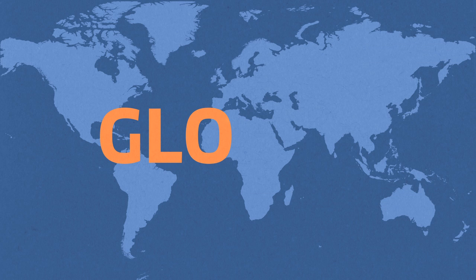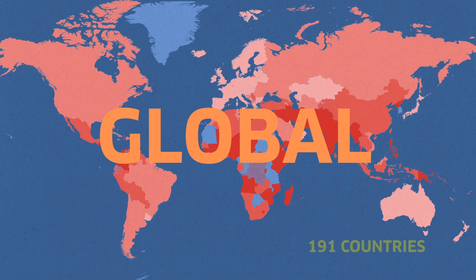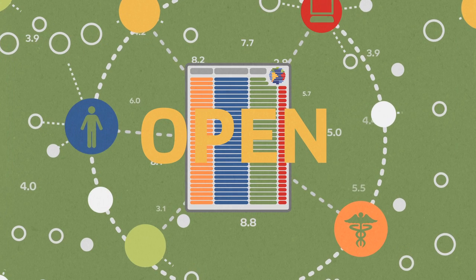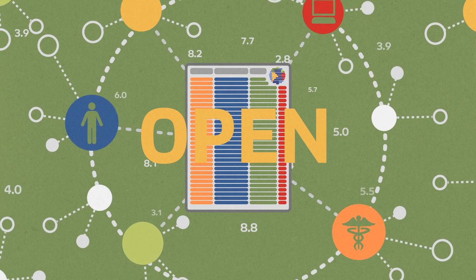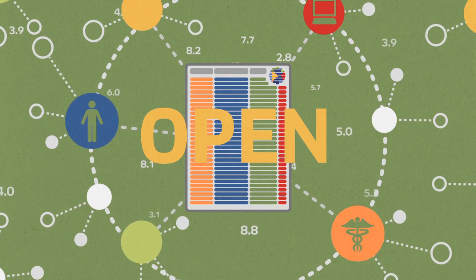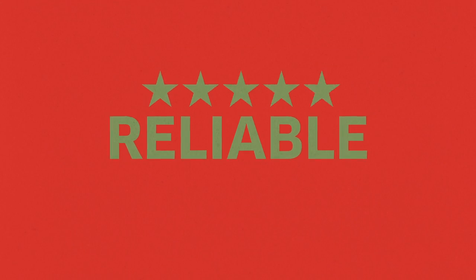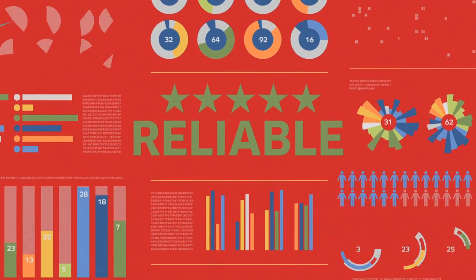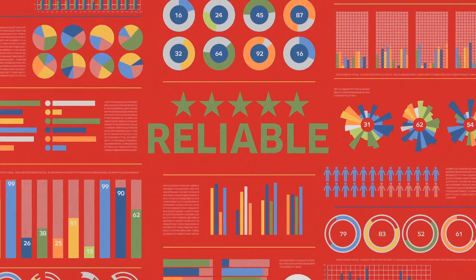INFORM is global — it covers 191 countries. It's open: the data and methodology are freely available. And it's reliable: it's based on the best methods and data and is regularly updated.